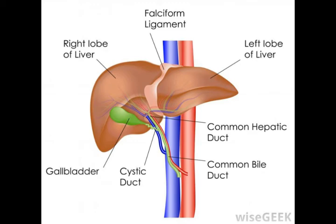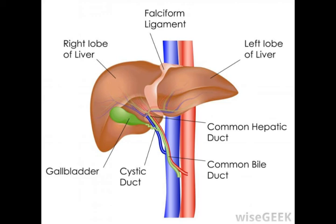The stomach and gallbladder also have structures referred to as the fundus. In the stomach, this region is in the upper left area of the stomach. The fundus provides room for gases which build up in the stomach and can also hold food which has not yet been digested. In the case of the gallbladder, the fundus is at the top of the organ, opposite from the cystic duct. Some surgical procedures can involve the fundus.